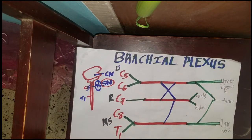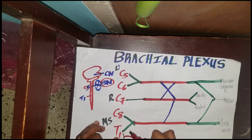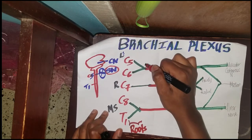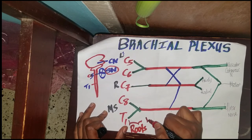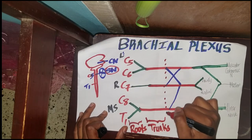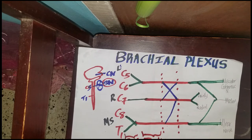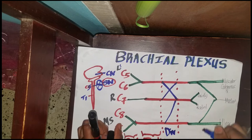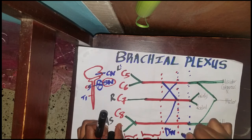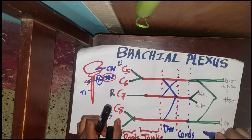Now let's label the different segments. From here to here we call them roots. The next section with the curly brackets we call trunks. Where we have our branches we call those divisions. Then we get cords. And where you see the axillary, radial, musculocutaneous, median, and ulnar nerves, we call those branches.